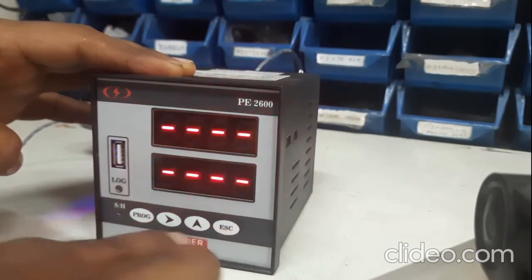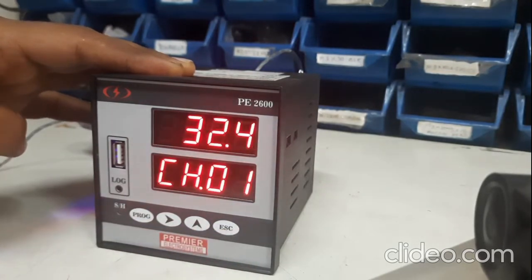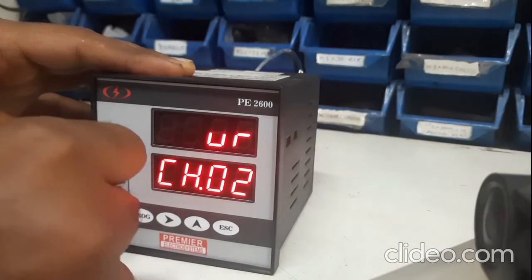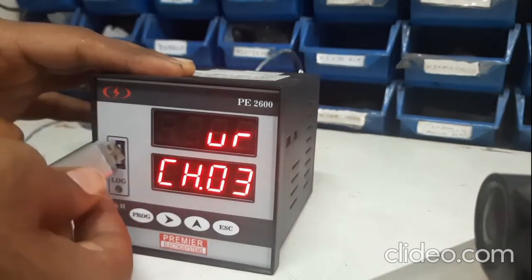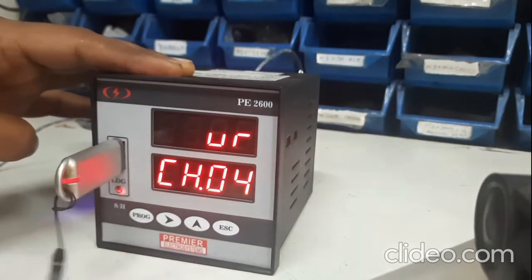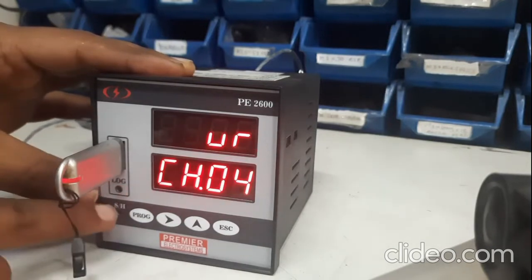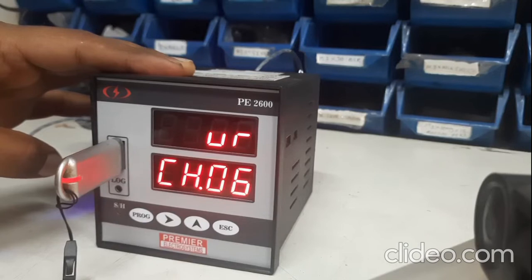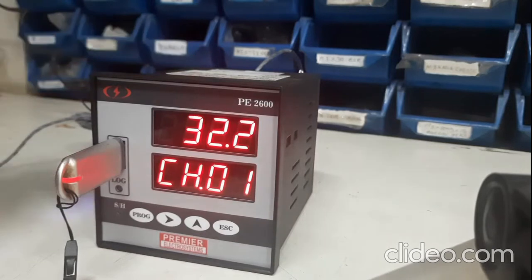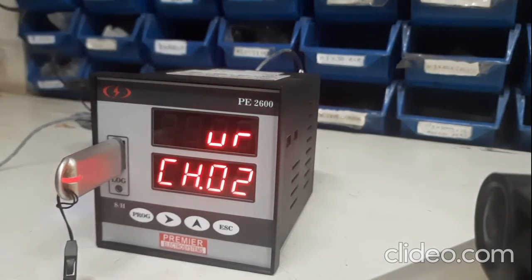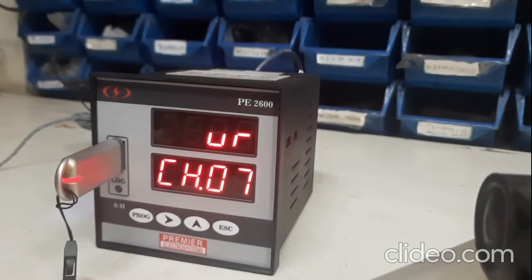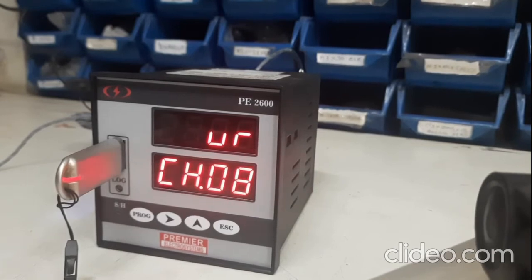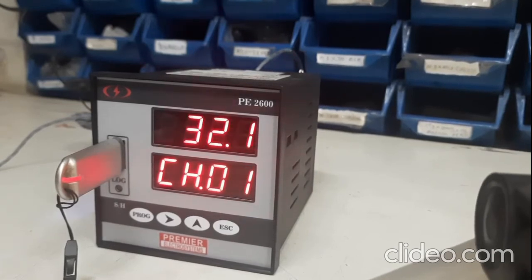To log the data you can just plug in the USB pen drive, and the indication over here indicates that the first record has been logged. Now after every one minute or whatever the log rate is set, the data logger will write into the pen drive. The latter part of this video will show you how to view it in the text and the excel file.